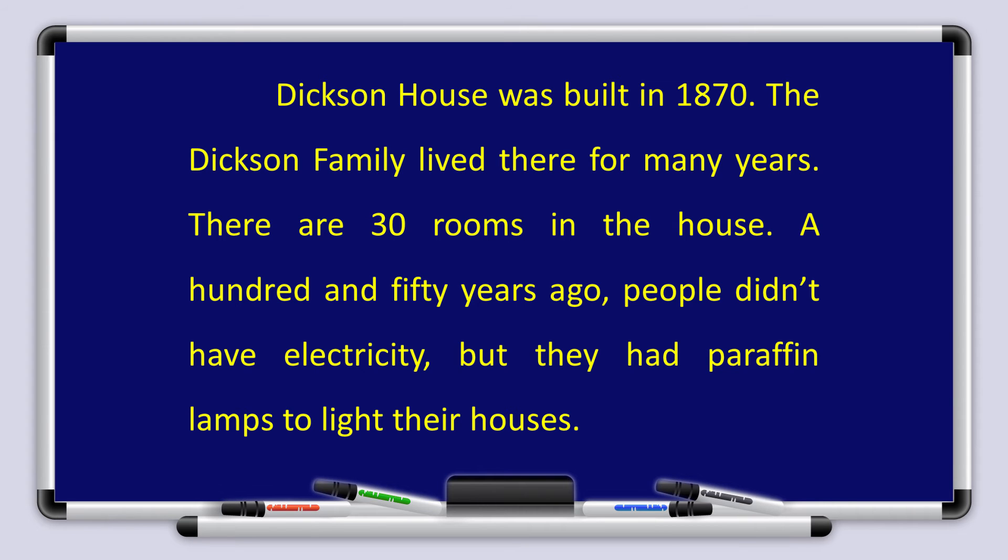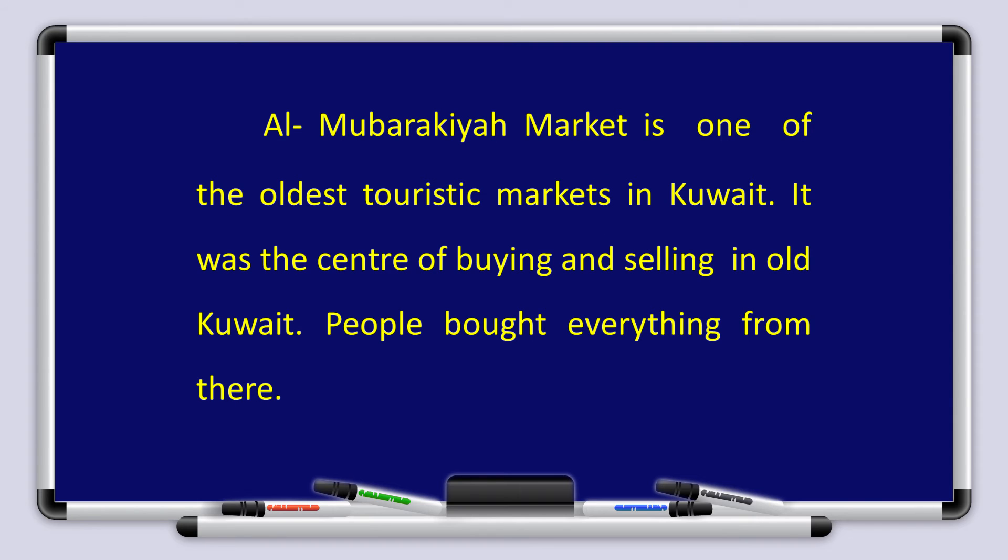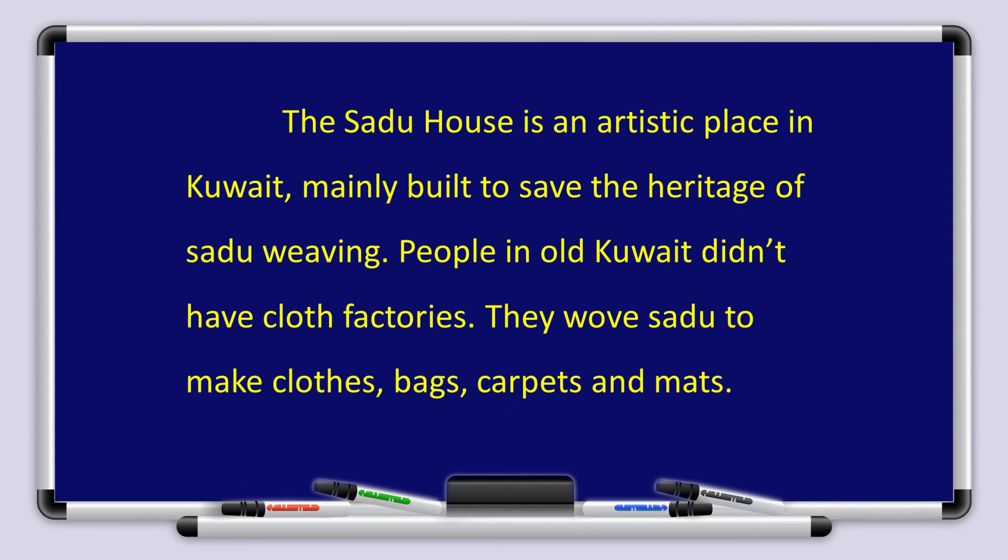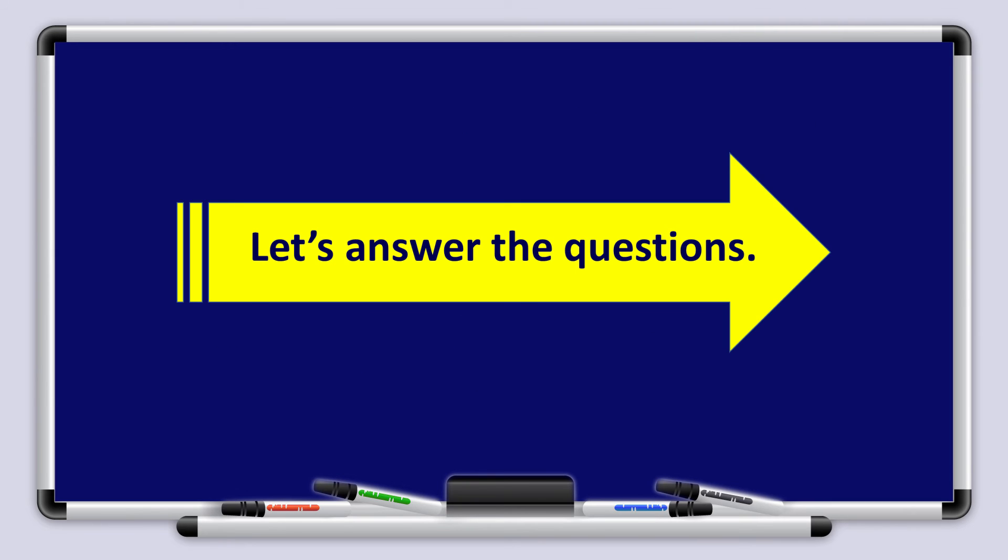Dixon House was built in 1870. The Dixon family lived there for many years. There are 30 rooms in the house. 150 years ago, people didn't have electricity, but they had paraffin lamps to light the houses. Al Mubarakiyya market is one of the oldest touristic markets in Kuwait. It was the center of buying and selling in old Kuwait. People bought everything from there. The Sadu house is an artistic place in Kuwait, mainly built to save the heritage of Sadu weaving. People in old Kuwait didn't have clothes factories. They wove Sadu to make clothes, bags, carpets and mats. Now, that's the paragraph. Let's answer the questions together.